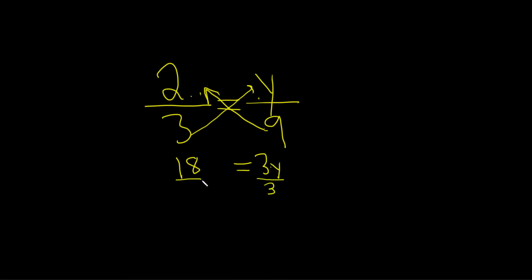you put the division symbol, draw a line, put a division symbol. Then you say, okay, how many times does 3 go into 18? So 6. That's because 6 times 3 is 18.